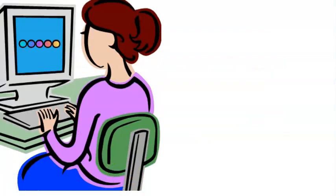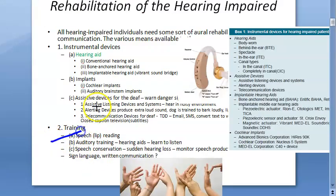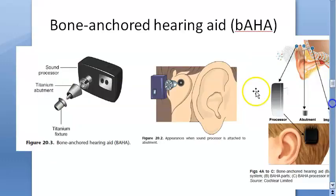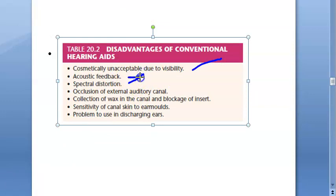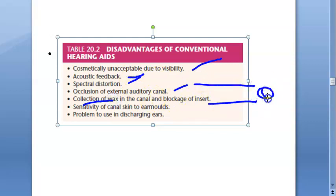To recap: we finished training, assistive devices, and conventional hearing aids. Now we move to bone-anchored hearing aids. But first, why move beyond conventional hearing aids? Because they are cosmetically unacceptable (they are visible), there is acoustic feedback and spectral distortion, there is occlusion of the external auditory canal, and there is collection of wax in the canal.